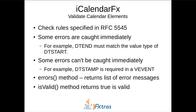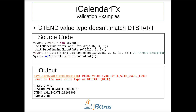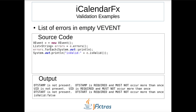All calendar elements have the errors and isValid methods. In this example, I have a vEvent with DateTimeStart and DateTimeEnd properties. Both are initially set to a local date value, which is called a date type. A local date time value is assigned to DateTimeEnd, which is a date with local time type. Because that type doesn't match the DateTimeStart type, an exception is thrown and the old value is restored. In another example, I create an empty vEvent. Because a vEvent has some required properties, the errors list contains error messages describing the missing properties and the isValid method returns false.